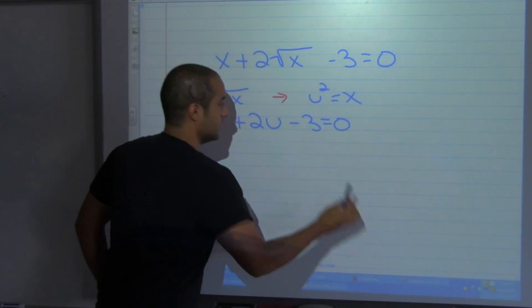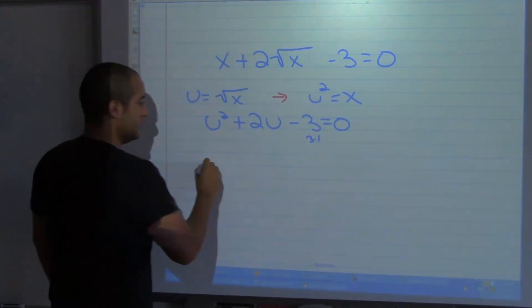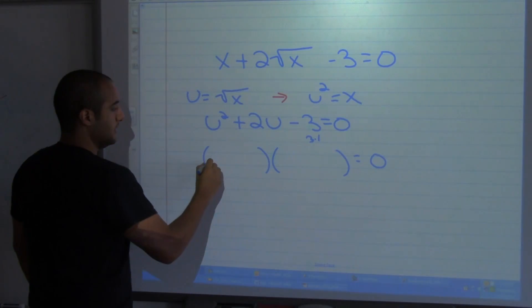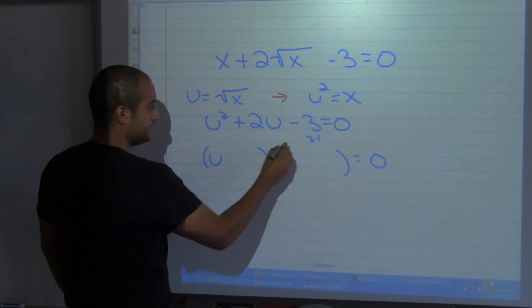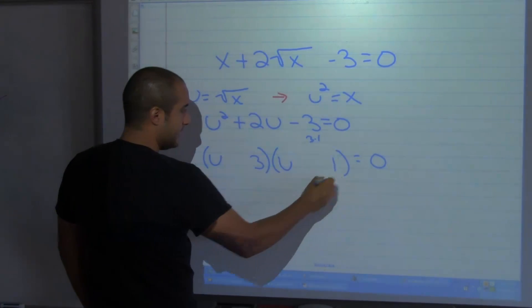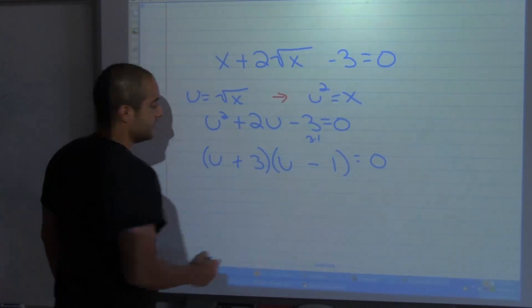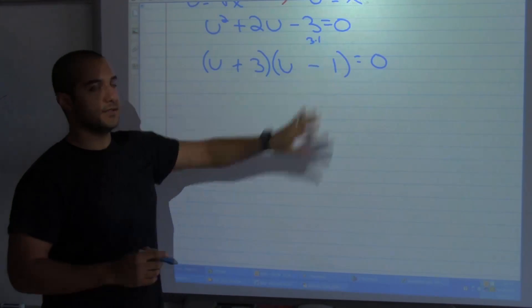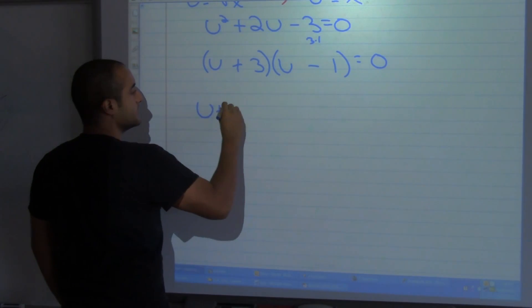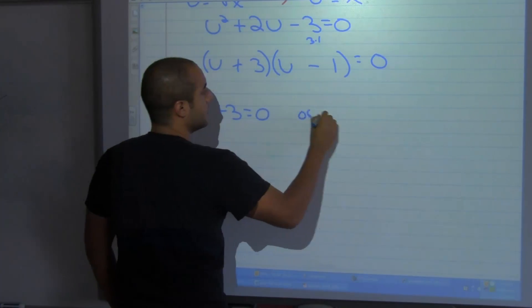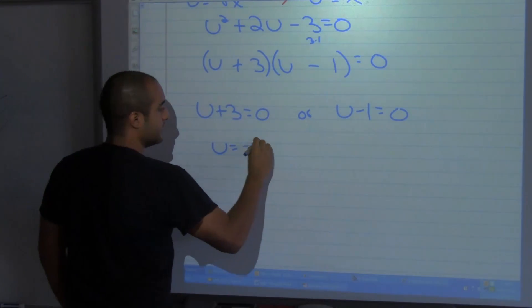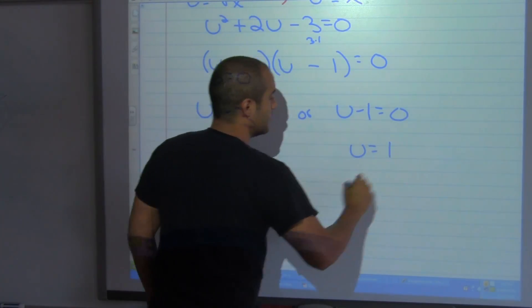So I'm going to go ahead and factor this out. I know it's 3 and 1, positive minus and negative. So remember either this or this is equal to 0. u plus 3 equals 0 or u minus 1 equals 0. u equals negative 3, u is equal to 1.